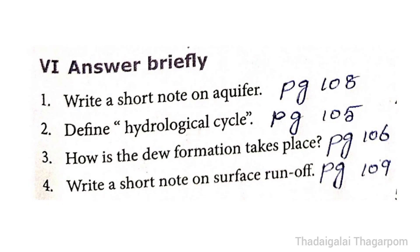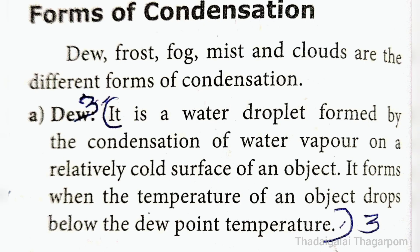3rd question: How does dew formation take place? The answer is given in page number 106, last paragraph under 'Forms of Condensation', heading A — Dew. Dew is a water droplet formed by the condensation of water vapor on a relatively cold surface of an object. It forms when the temperature of an object drops below the dew point temperature.